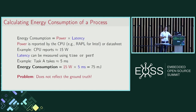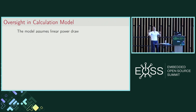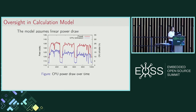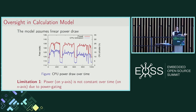Unfortunately, this is not the truth — this is very far away from what is actually going on. Let's try to peel the layers and see what is happening. The first oversight in our calculation model is that this assumes a linear power draw. I took the value of 15 watts and assumed the CPU is running at 15 watts for the entire five milliseconds. That is not the case. Here's a slightly realistic CPU power curve — we can see a lot of valleys and peaks. If you happen to measure the power at a valley, you would not even get the full picture. So the first limitation is that power is not constant over time.